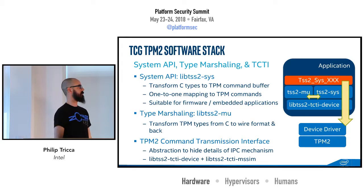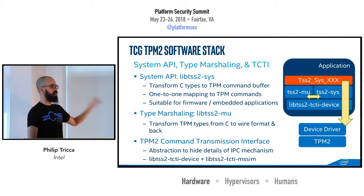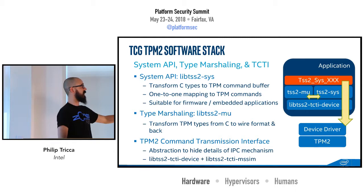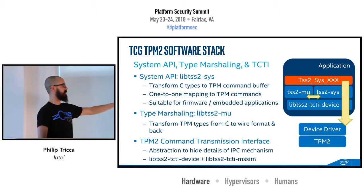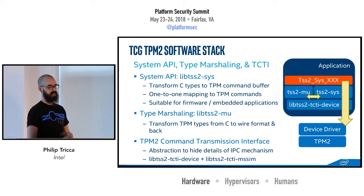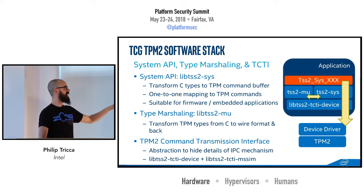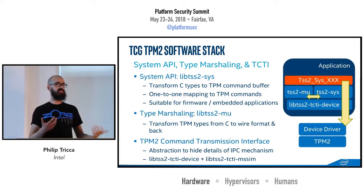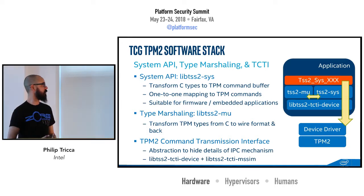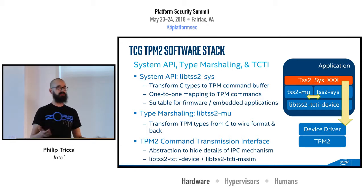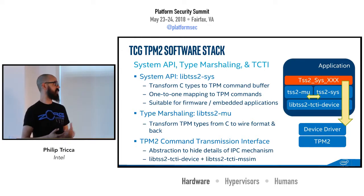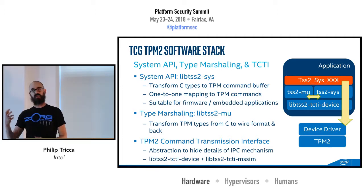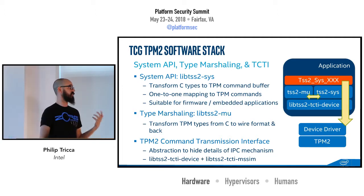This next view shows what you might see from an actual application talking directly to the device driver using the TCTI mechanism. You can see there the tss2-sys library where we have the System API implemented. Next to that is the tss2-mu — the type marshaling library, which I actually added to the spec. The need for this came out of the implementation: the command and response buffers that go to and from the TPM are in network byte order, and you may not have that byte order in user space, so having a library to take TPM structures mapped into C structures and turning them into network byte order is extremely useful.